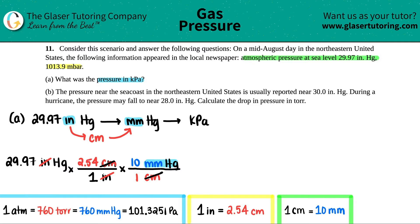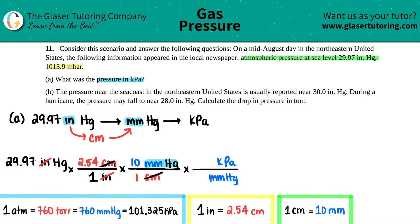So now set up the final ratio: 101.325 kilopascals on top and 760 millimeters of mercury on the bottom. The millimeters of mercury cancel out and you're left with kilopascals. Use the conversion: 760 mmHg equals 101.325 kPa.